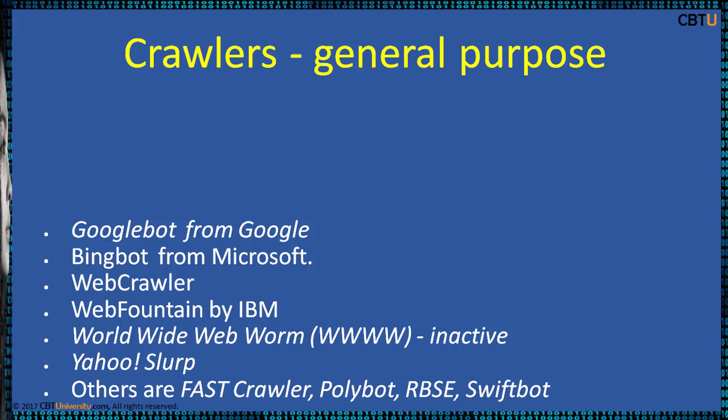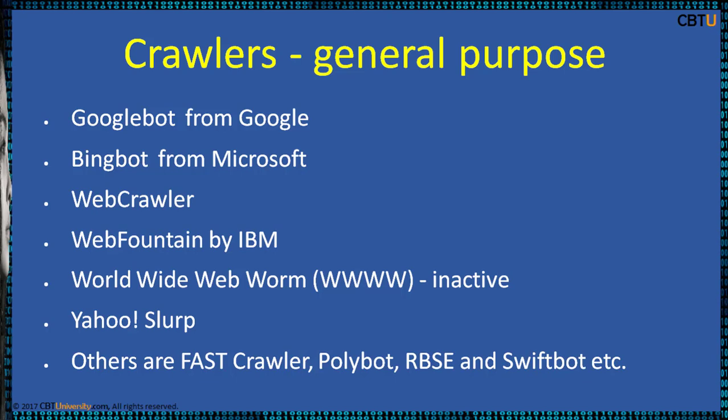General purpose crawlers include: Googlebot from Google, a search bot software used by Google which collects documents from the web to build a searchable index. Bingbot, deployed by Microsoft in 2010 for the Bing search engine, replacing MSN bot. WebCrawler, a meta search engine that blends top results from Google, Yahoo, and other search engines. Web Fountain, an internet analytical engine implemented by IBM for studying unstructured data on the Web. WWWW (World Wide Web Worm), now inactive, was a crawler used to build a simple index of document titles and URLs. Yahoo Slurp was Yahoo's search crawler until Yahoo partnered with Microsoft to use Bingbot instead. Other popular crawlers include Fastcrawler, Polybot, RDSC, Swiftbot, and others.